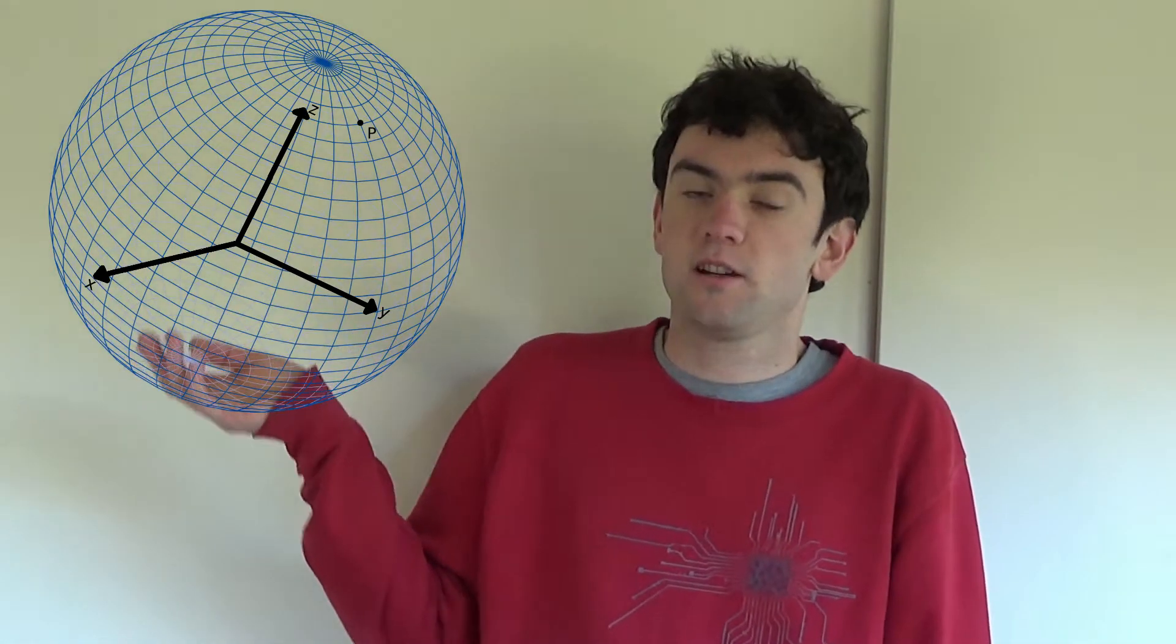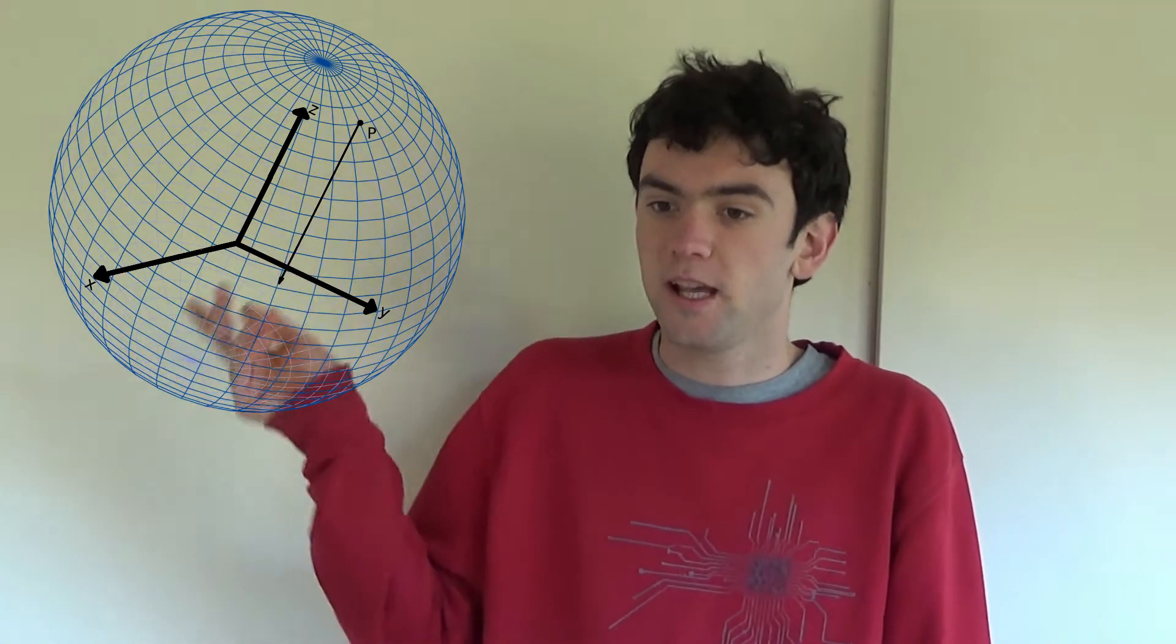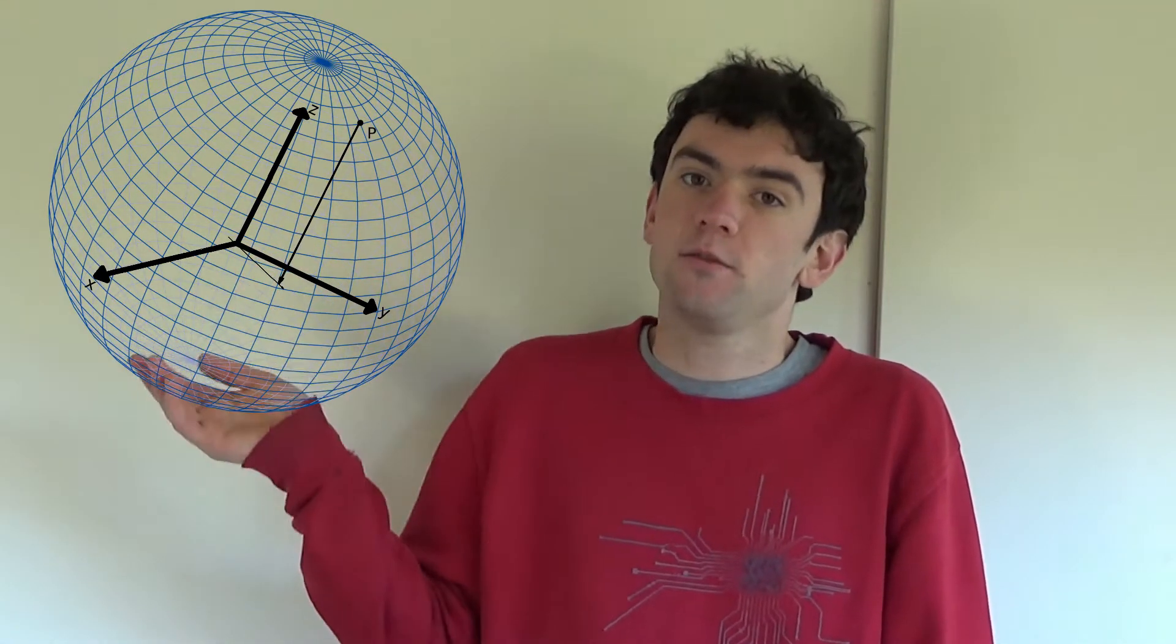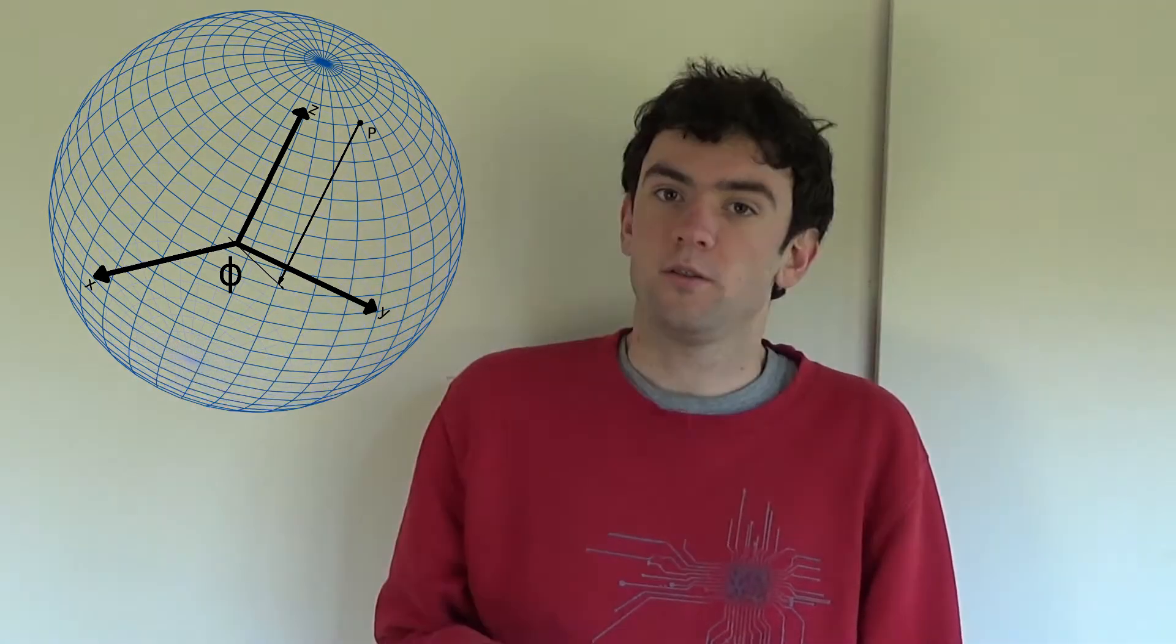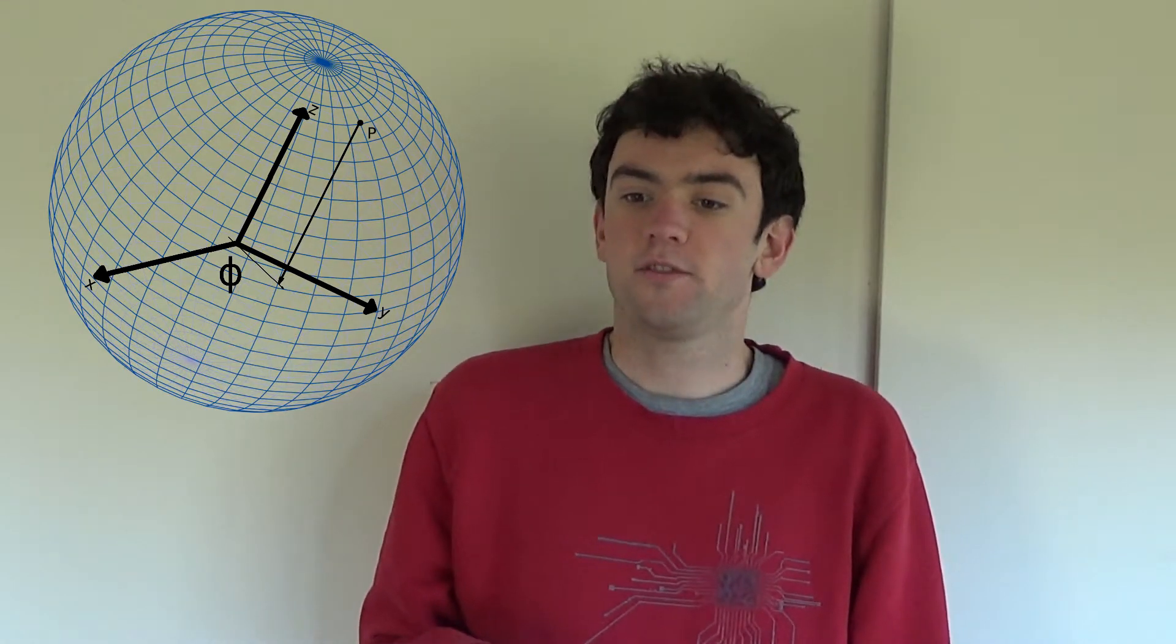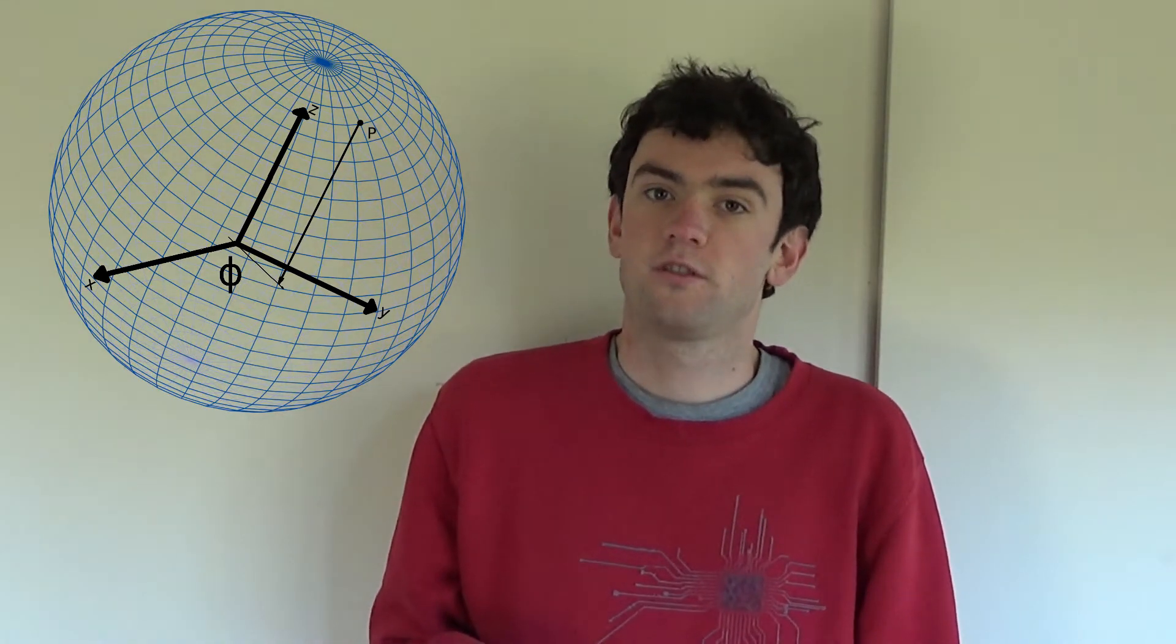So let's define something on the surface of a sphere, say the Earth. Now I can project that point onto the xy plane and take the angle that point makes with the x axis, and this is called the azimuthal angle, or in the case of the Earth, longitude.